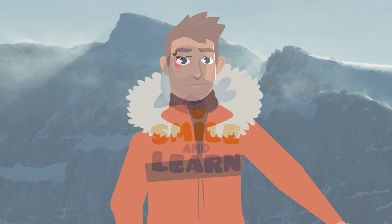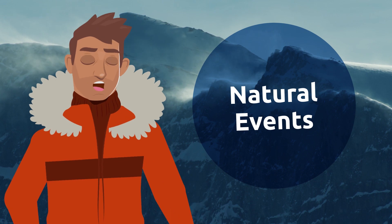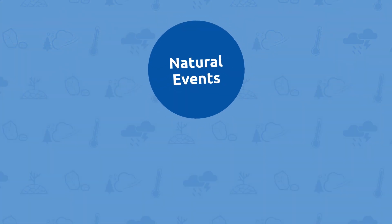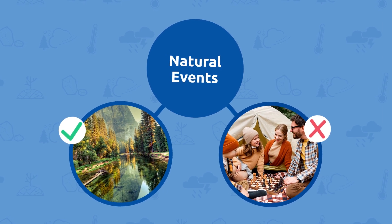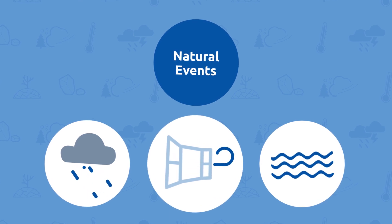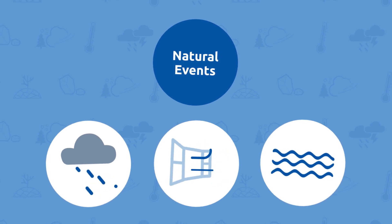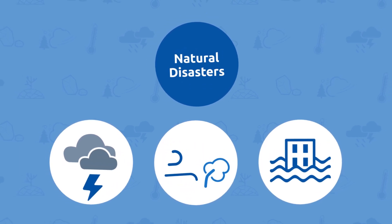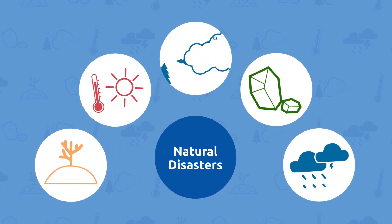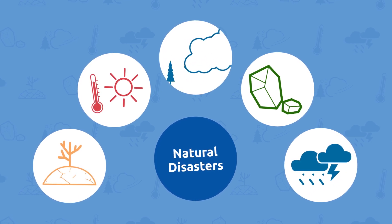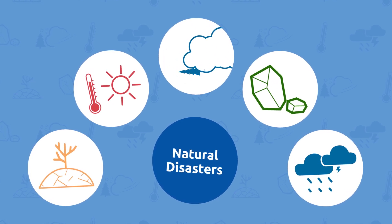Smile and Learn. Hello Adventurers! In the last episode, I told you that natural events are constant changes that occur in nature that have not been directly caused by humans, such as rain, wind, or tides. When natural events become dangerous and destructive, we call them natural disasters. Learning about natural disasters helps us to be forewarned and to be prepared for the worst. Do you want to learn about some that weren't mentioned in the previous episode? Let's take a look!